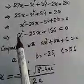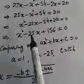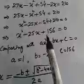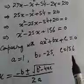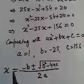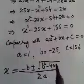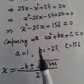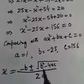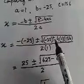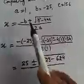We can see that a equals 1, b equals minus 25, and c equals 156. We apply the quadratic formula: x equals minus b plus or minus square root of b squared minus 4ac, divided by 2a. Substituting: x equals minus of minus 25, plus or minus square root of minus 25 squared minus 4 into 1 into 156.